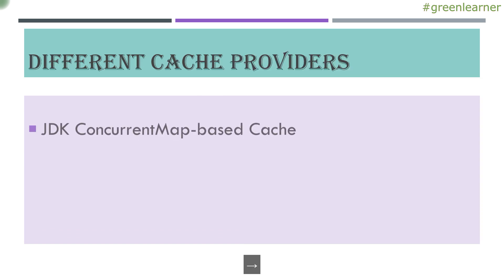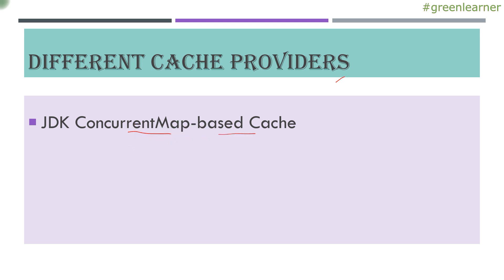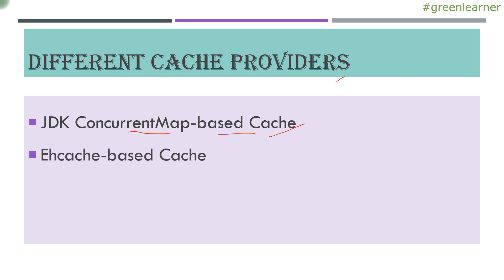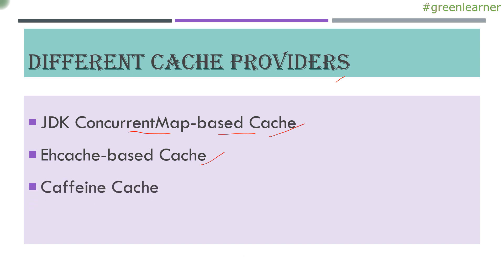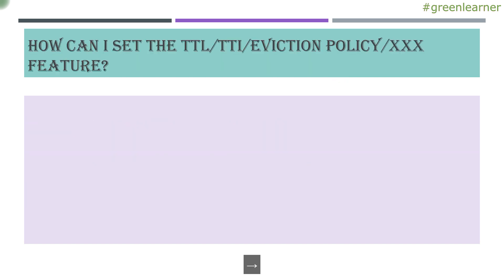That is all about the annotations we will see in the demo. Moving ahead to different cache providers: first there is JDK ConcurrentHashMap — we will start the demo with that. Then we will move to EHCache-based cache and see what it is and how Spring Boot uses it. Next is Caffeine cache. These are some of the providers; there are many more which we will see in later videos.